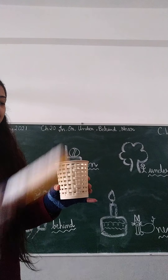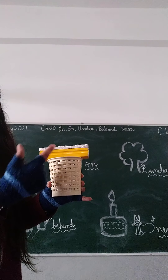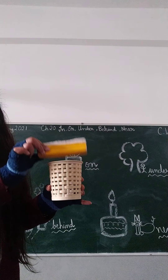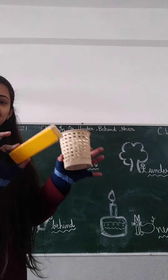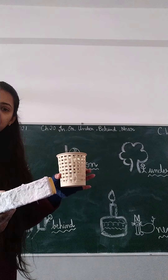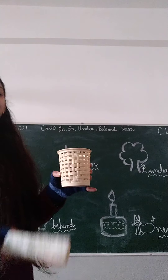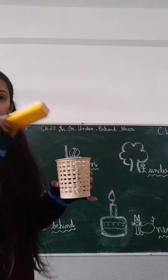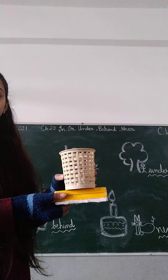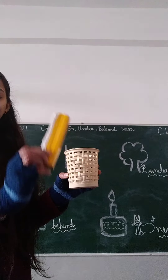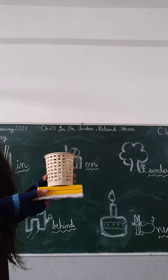The next word is 'on'. My duster is on the box — when we have kept something over it, on top of it, that is 'on'. The third word is 'under'. For under, it means we have not kept something inside it, and we have not kept something over it. Instead, we have kept the thing underneath — my duster is under the box.